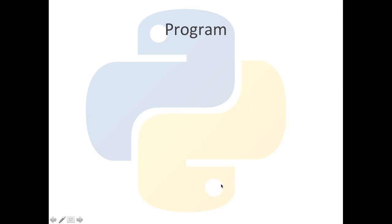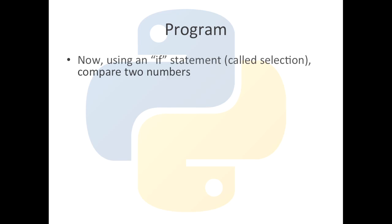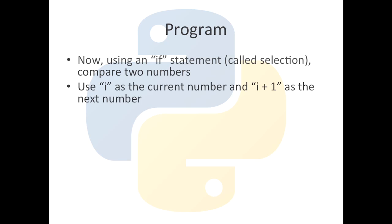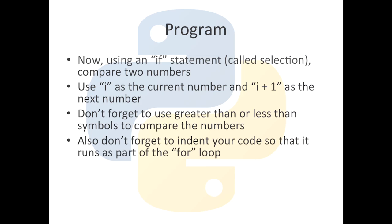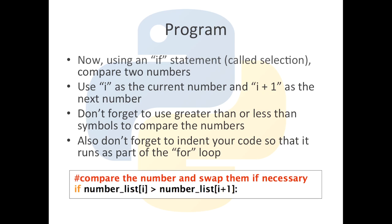We need an if statement to compare two numbers. We use i as the current number, so i+1 will be the next number and i+2 the one after that. Don't forget to use the greater than or less than symbols, and indent your code so it runs as part of the for loop. The code reads: if number_list[i] is greater than number_list[i+1] — each time the for loop runs, i starts at 0 then becomes 1, 2, 3, 4 and so on.